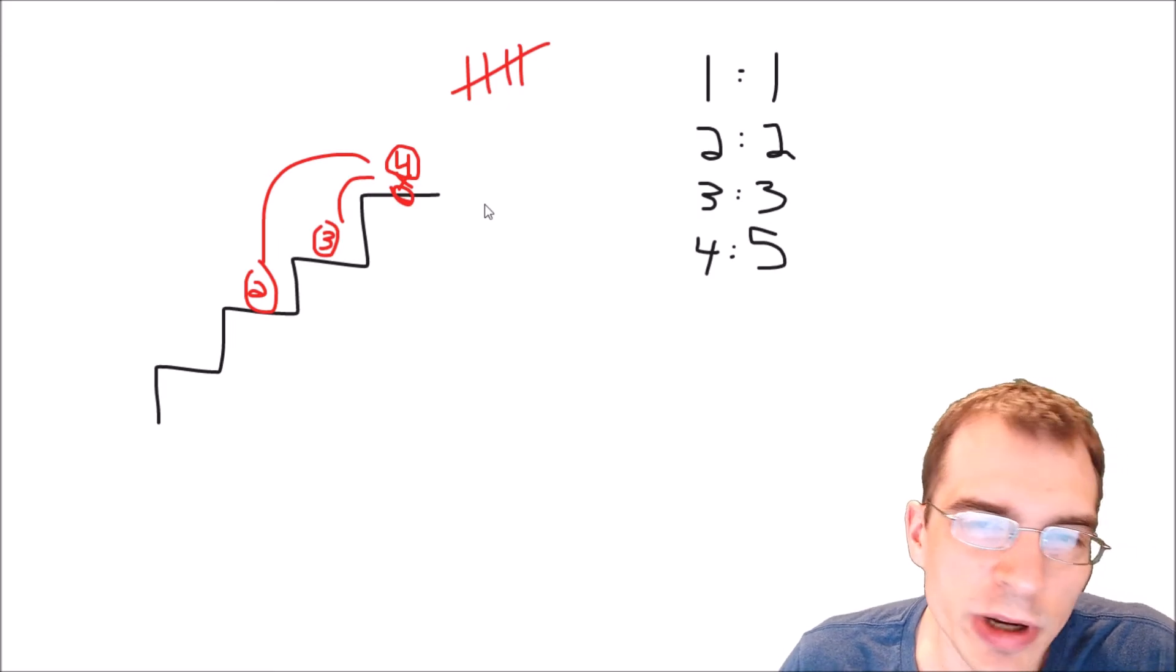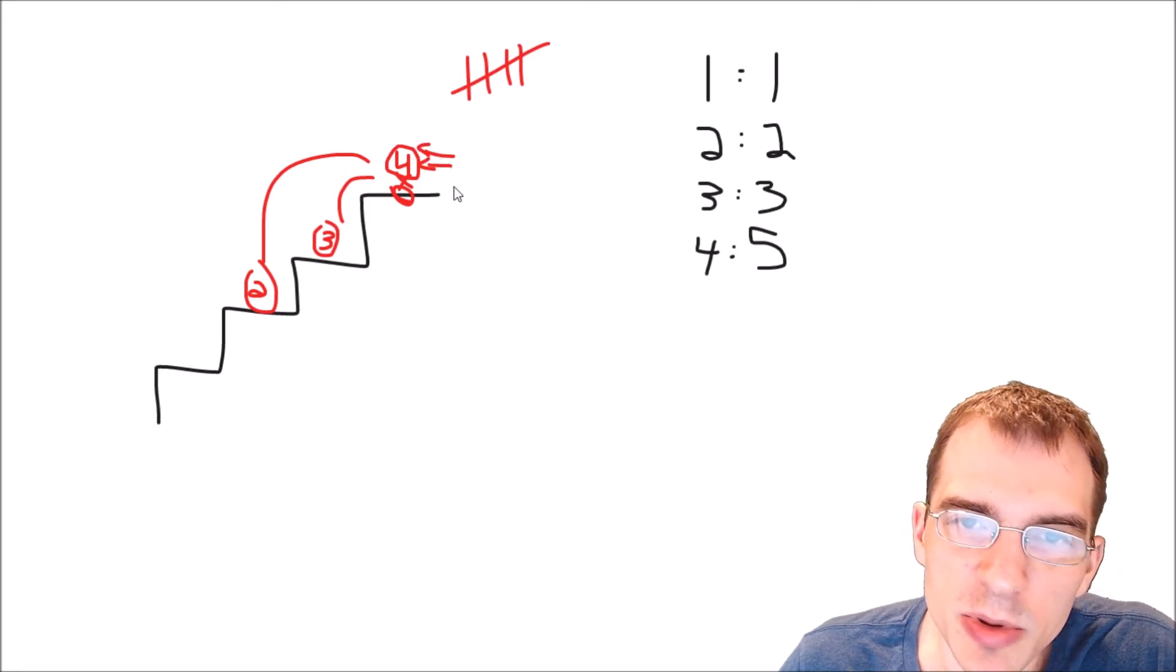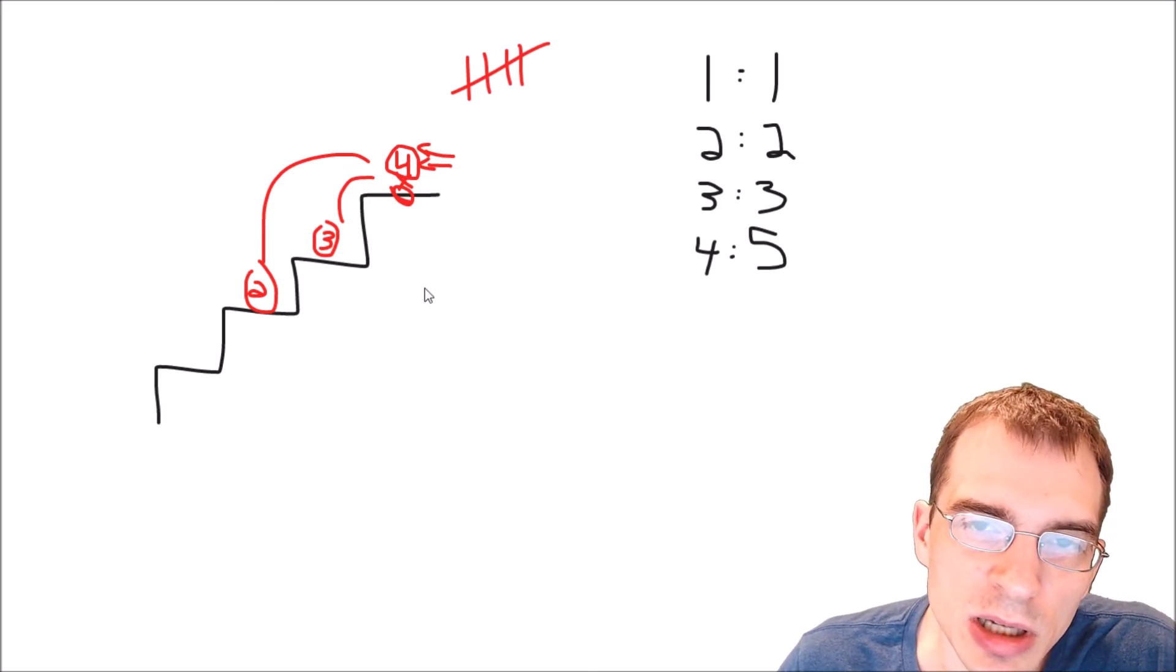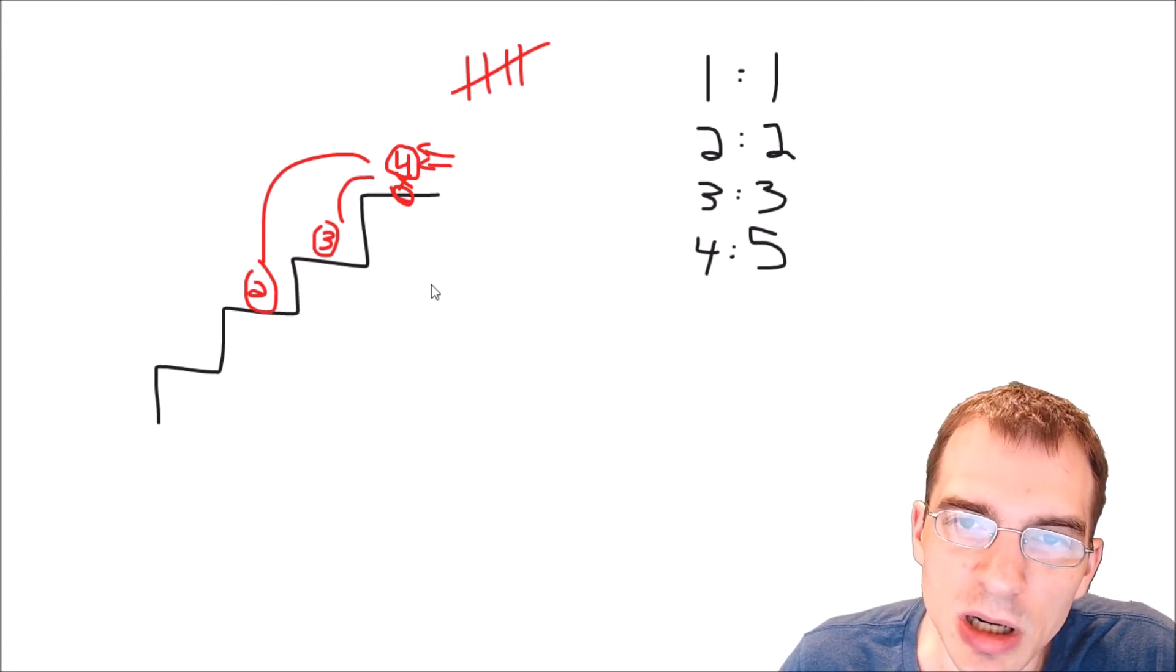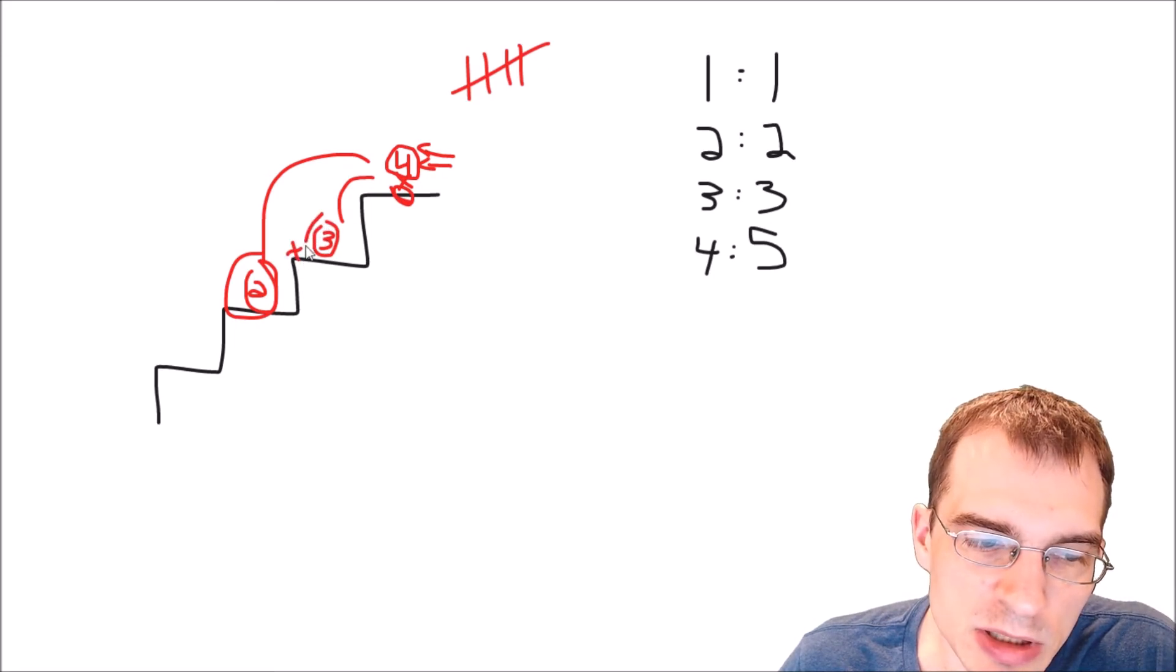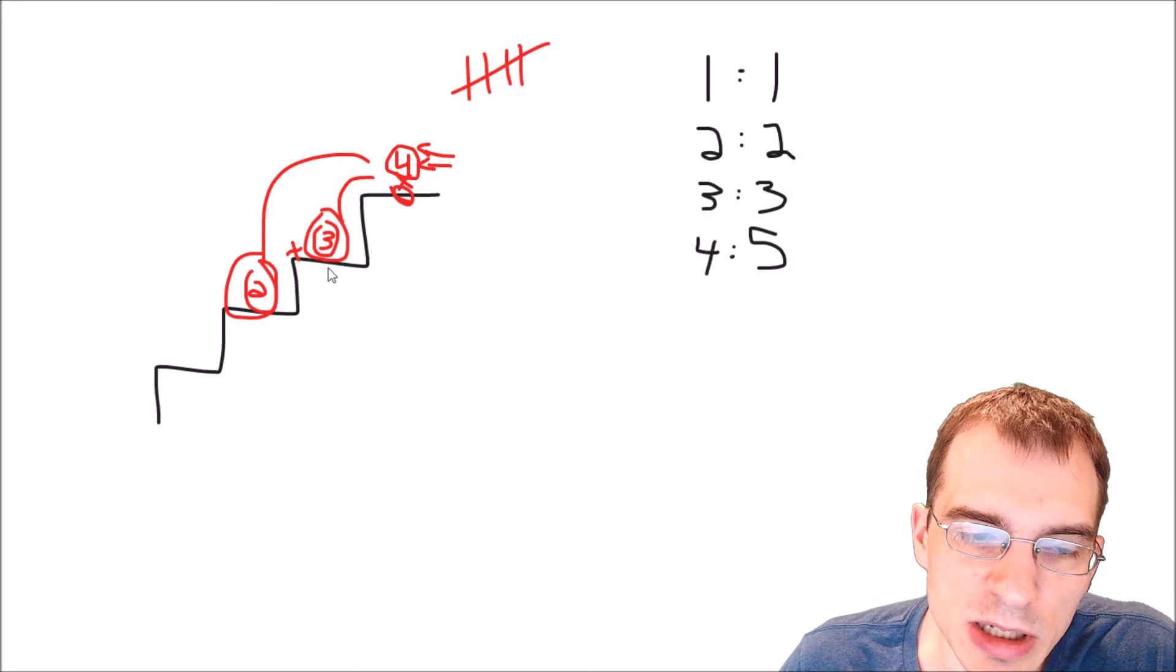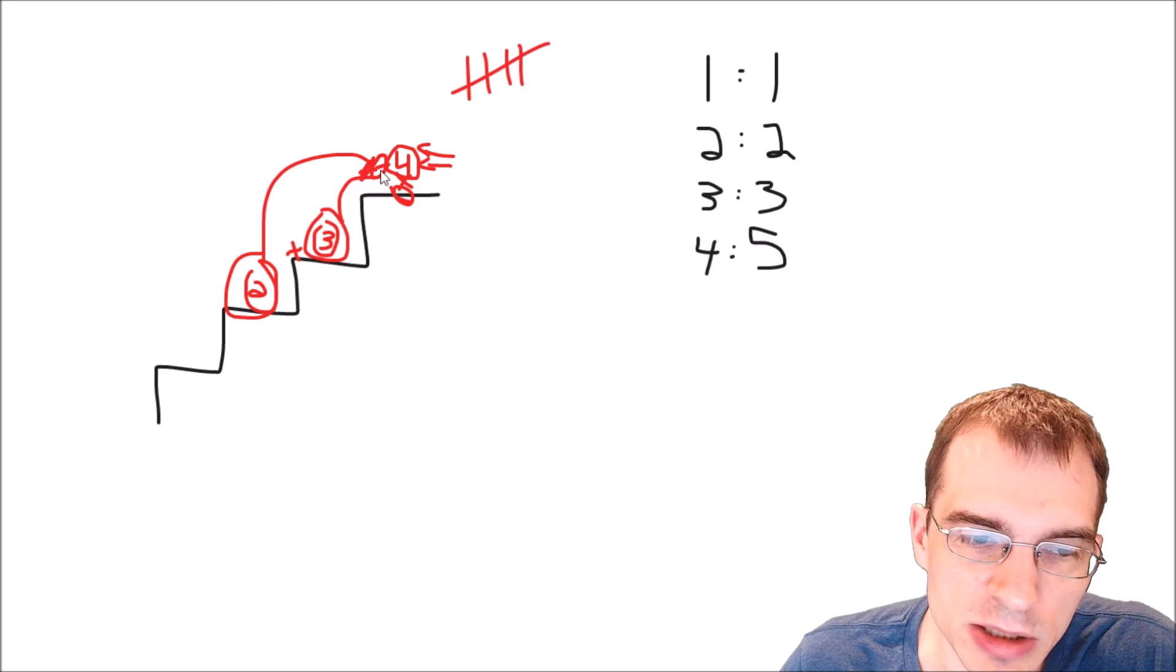So basically, that provides a way to break down this four stair problem into two smaller sub problems. Basically, the number of steps it takes to get to stair four should be the combination of the possibilities that lead to it. So the only way to get there is either from here or here. So that means the number of possibilities to get to four should just be the sum of the number of possibilities to get to two plus the number of possibilities that lead to three. And those two things together should result in the amount of possibilities to get to four because those are the only things that lead directly to four.